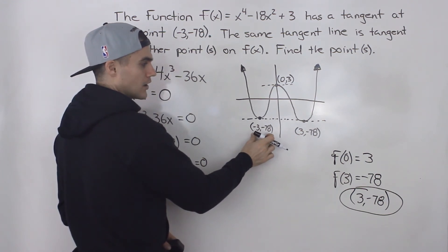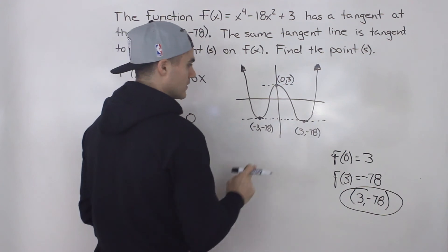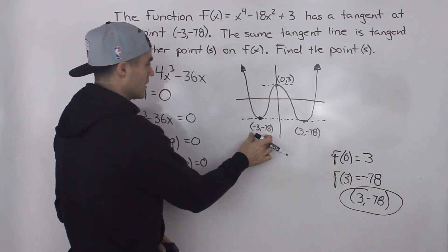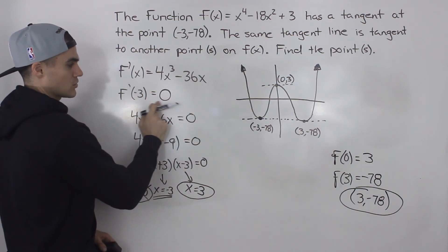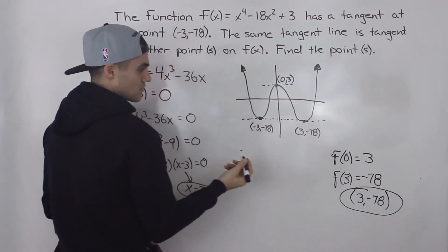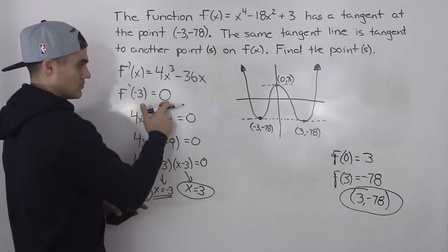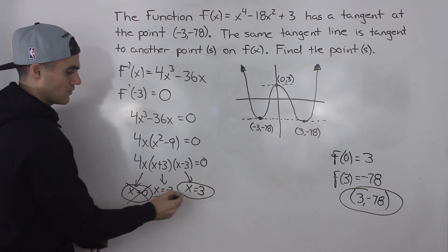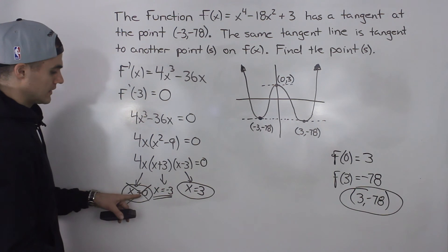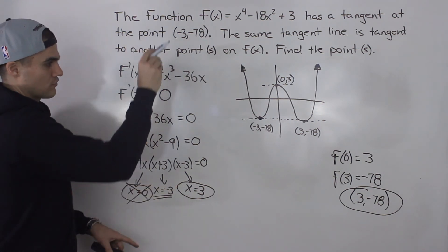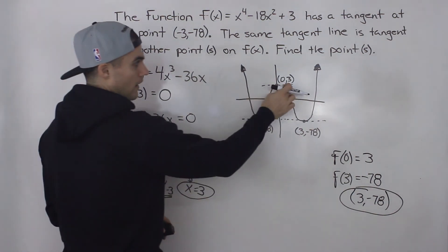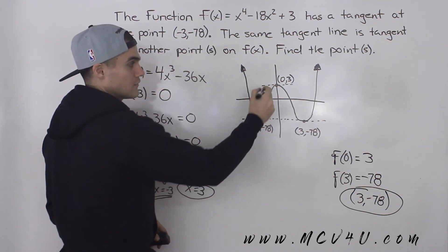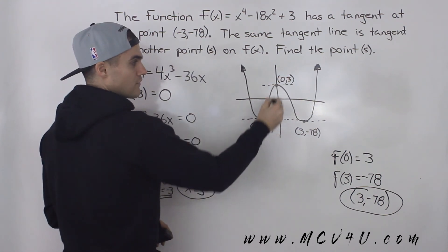To recap: first we found the slope of the tangent at (-3, -78) by taking the derivative and plugging in -3, giving a slope of 0. Then we found what other x-values have a slope of tangent of 0 by setting the derivative equal to 0, factoring, and getting x = 0 and x = 3. Plugging x = 0 into the function gave y = 3 — not -78 — so it's not the same tangent line even though it has the same slope.